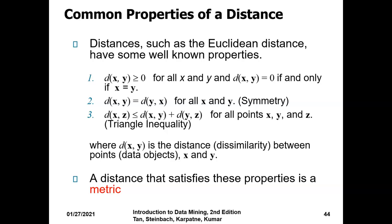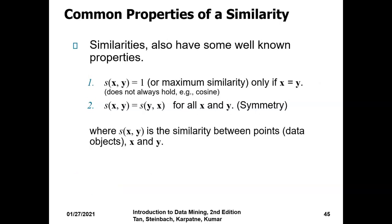A distance that satisfies these properties is a metric. It has well-known mathematical properties which could be termed as symmetry at point 2, and another could be triangle inequality. Other common properties also have some well-known properties like maximum similarity and symmetry.